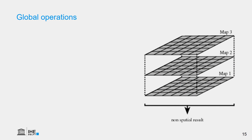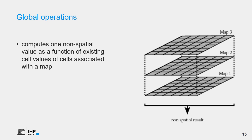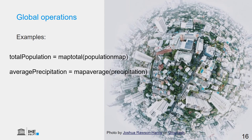Then there are global operations. They consider all the values in a map, and the result is a non-spatial value, like the total or average of all values in the map. An example is calculating total population: each cell has the number of people living in that pixel, and we simply calculate the total — a global operation because all pixels contribute to the calculation. Another example is precipitation: if we have a precipitation map and want the average of all pixels in the raster, we use a global operation, and the result is the average precipitation value over the whole raster area.